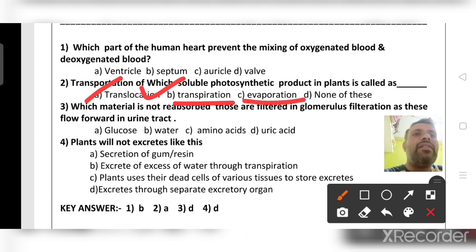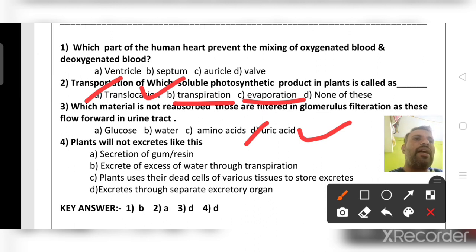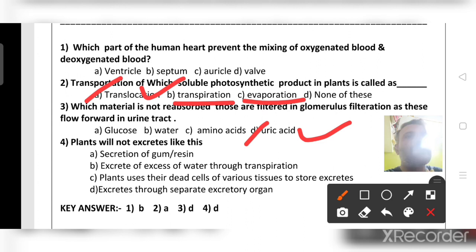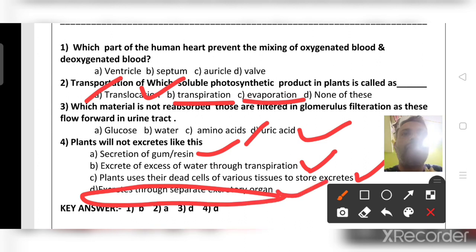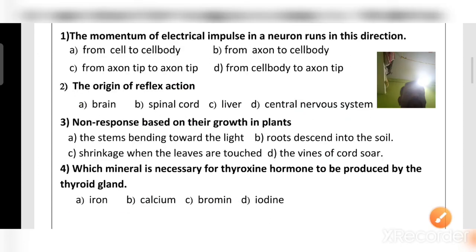Which material is not reabsorbed after filtration in the glomerulus as it flows forward in the urine tract? The answer is uric acid. Glucose, water, and amino acids undergo refiltration, but uric acid does not. Plants excrete through secretion of gum and resin, and excess water through transpiration. They also use dead cells of various tissues to store excretory products. Plants do not have a separate excretory system — that is the wrong option and the answer to the question.